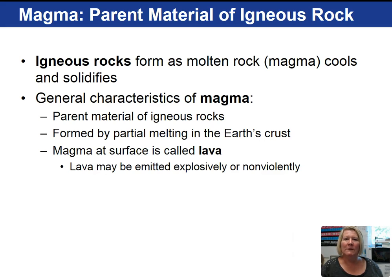Some general characteristics of magma: it is the parent of the igneous rocks. It forms by partial melting of the Earth's crust, such as in decompression and flux melting, previously discussed in Chapter 2. And when magma comes to the Earth's surface, we refer to it as lava.